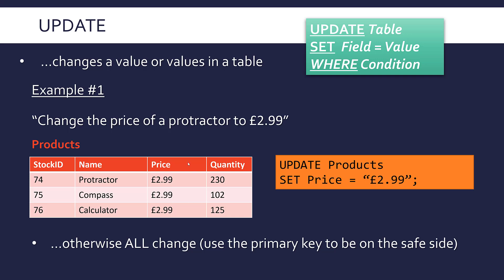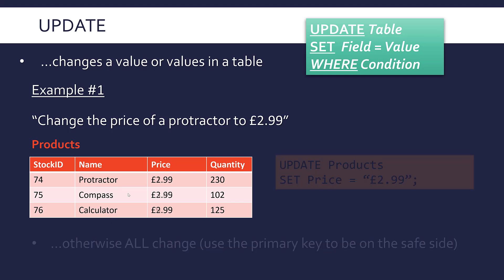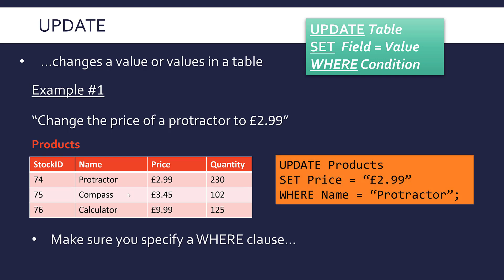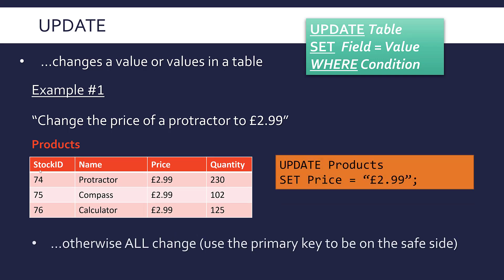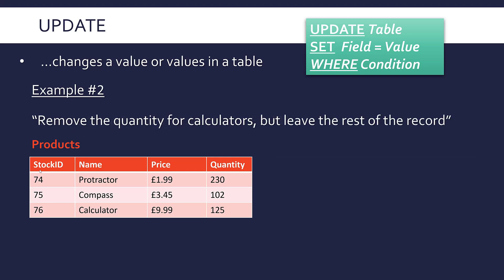In my previous example I used name equals 'protractor' to specify the record, but if you really want to be safe, use a primary key, because the primary key is unique and will only change one row. If you had two protractors being sold, both would get changed with what I had before. So to be safe, use the stock ID — though here it's not necessary.